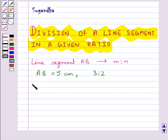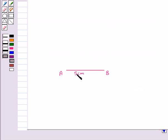So our first step would be draw a line segment AB of the given length. So this is the line segment AB.